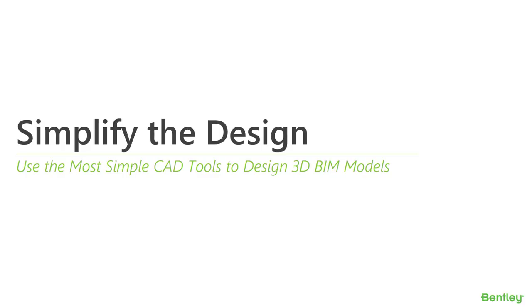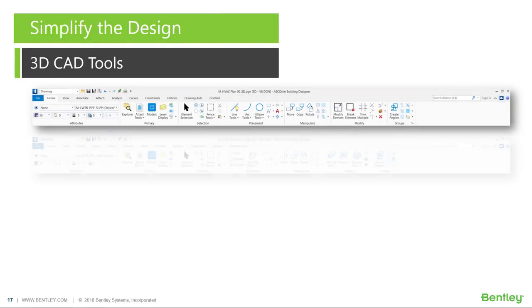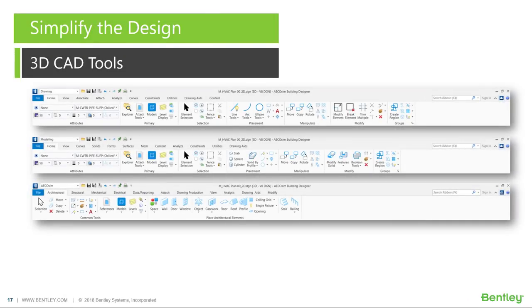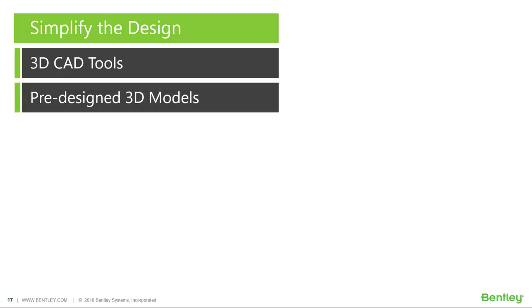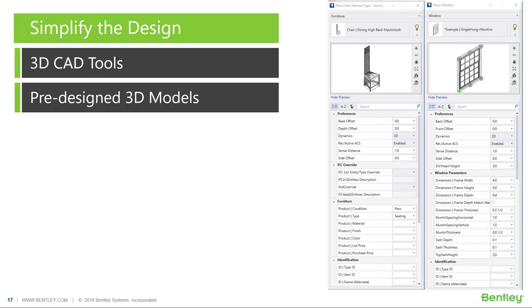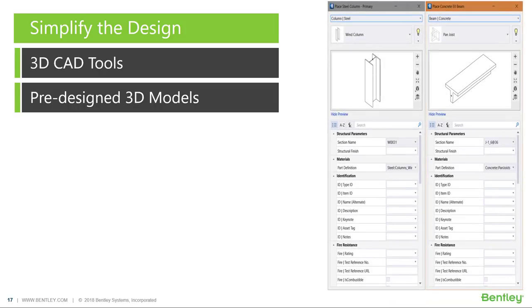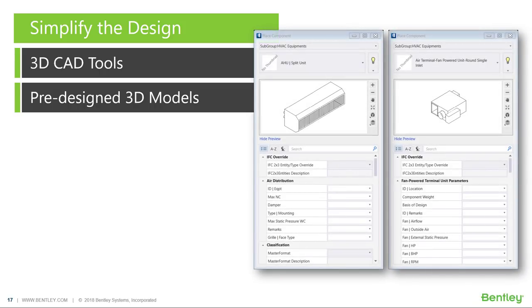Let's see how, by using the most simple CAD tools, Ecosim can help you simplify the design of a building. Users would already know how simple the 3D CAD tools are — add to that tools that help you add BIM information into your design. Along with Ecosim, you'll receive a huge library of pre-designed 3D models of different components like chairs, windows, columns, beams, cooling towers, VAVs, AHUs, and fittings like T's, bends, etc., which conform to predefined catalogues.